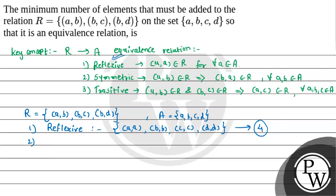For symmetric relation, we need (b,a) since (a,b) is present. We already have (b,c), so we need (c,b). We also need (d,b) since (b,d) is there. Additionally, (a,d) is not present, so we need (d,a) as well. That gives us the symmetric pairs to add.